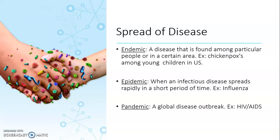There are three ways that identify types of spread of diseases. The first way is an endemic. This means that the disease is found among a certain group of people or in a certain area. An example of an endemic is young children in the U.S. contracting chickenpox. The second type is an epidemic, which is when a disease spreads rapidly over a short period of time. An example of an epidemic is influenza.